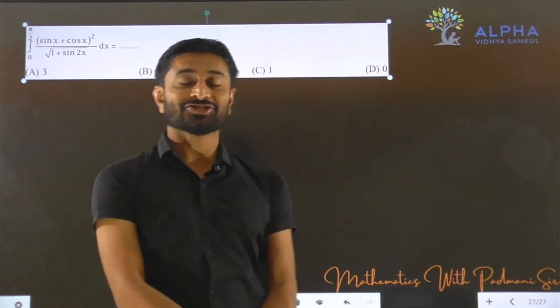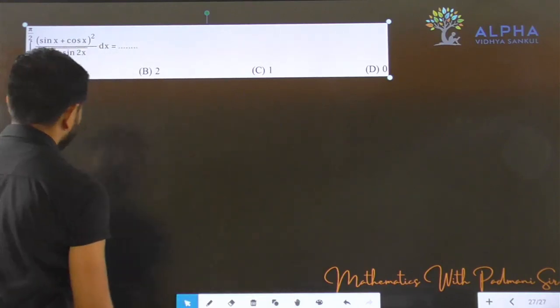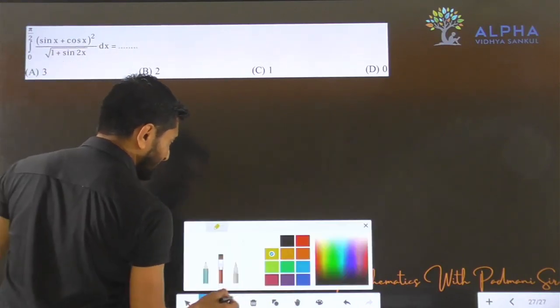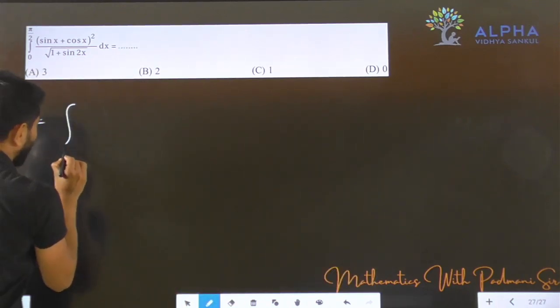Okay Mitro, next question. We have to evaluate this integral from 0 to pi by 2, integration limit 0 to pi by 2.